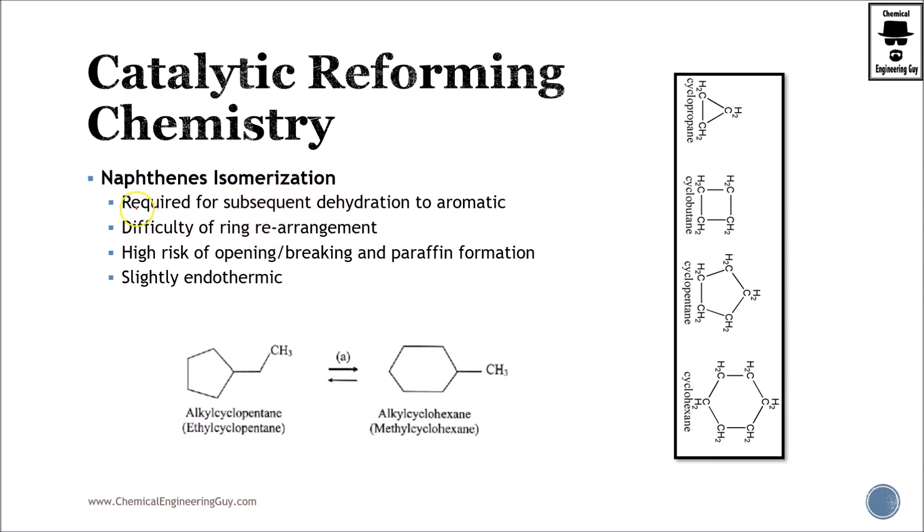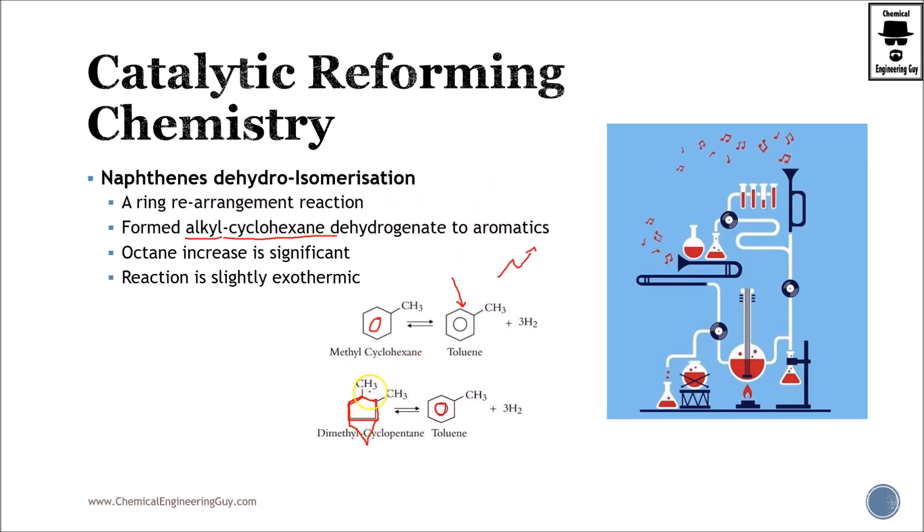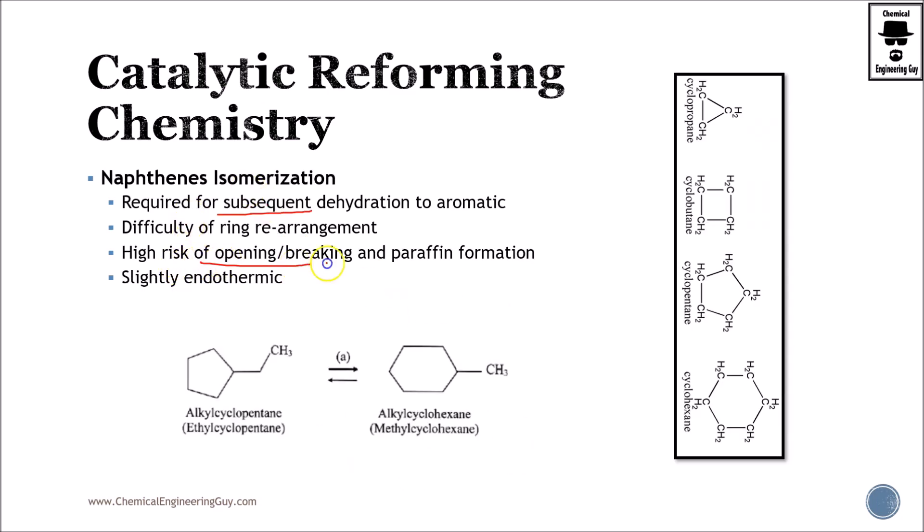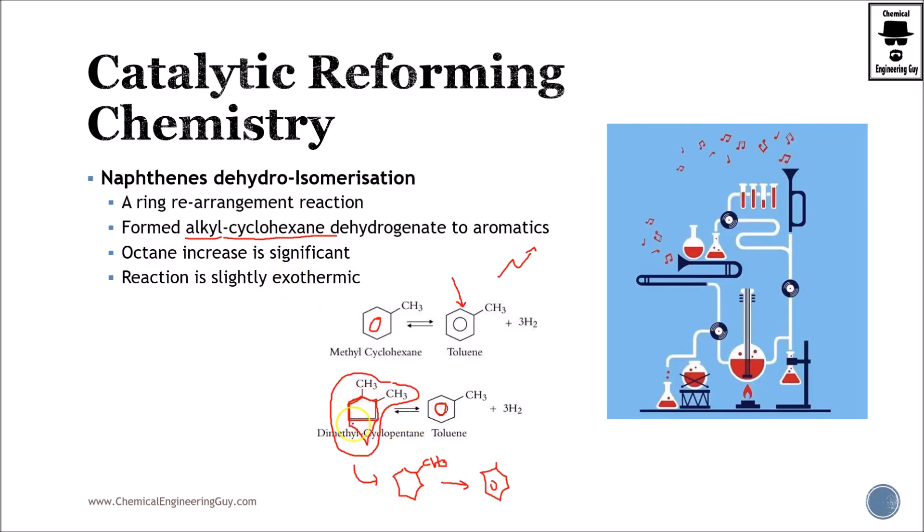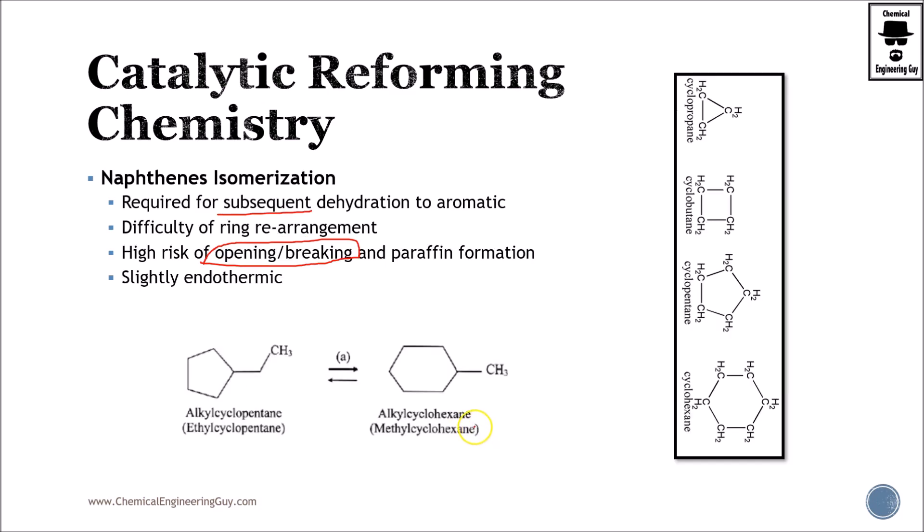Naphthene isomerization is also important, required for subsequent dehydrogenation to aromatics. So technically this was the main step, one previous step was the rearrangement or isomerization in order to then convert it to toluene via the dehydrogenation. This is the case. High risk of opening and breaking as you can imagine here when you are translating from a five ring to a six ring. There can be breaking of the ring and you form a linear or isoparaffin. A little bit endothermic.